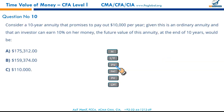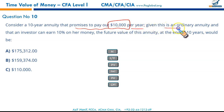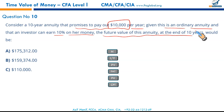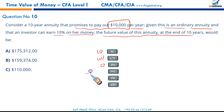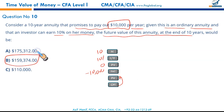Consider a ten-year annuity that promises to pay $10,000 per year. Given this is an ordinary annuity and an investor can earn 10%, this is a straightforward future value question. N = 10, I/Y = 10%, PMT = $10,000, PV = 0 — compute FV. The result is $159,374. That makes B the correct option.